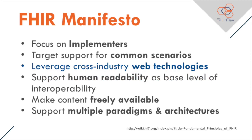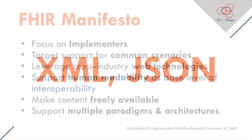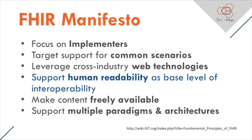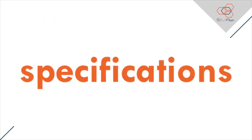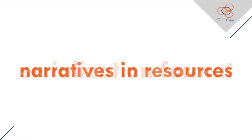Leverage cross-industry web technologies: reusing existing and successful web technologies that implementers are already using. Instances are shared using XML and JSON — the same technologies used in web calls in Facebook and Twitter. Support human readability as a base level of interoperability: specifications are concise and easy to understand. It also uses a human-readable serialization format that will be easy for developers to implement, and for the end users, information is modeled as human-readable as possible using narratives and resources.